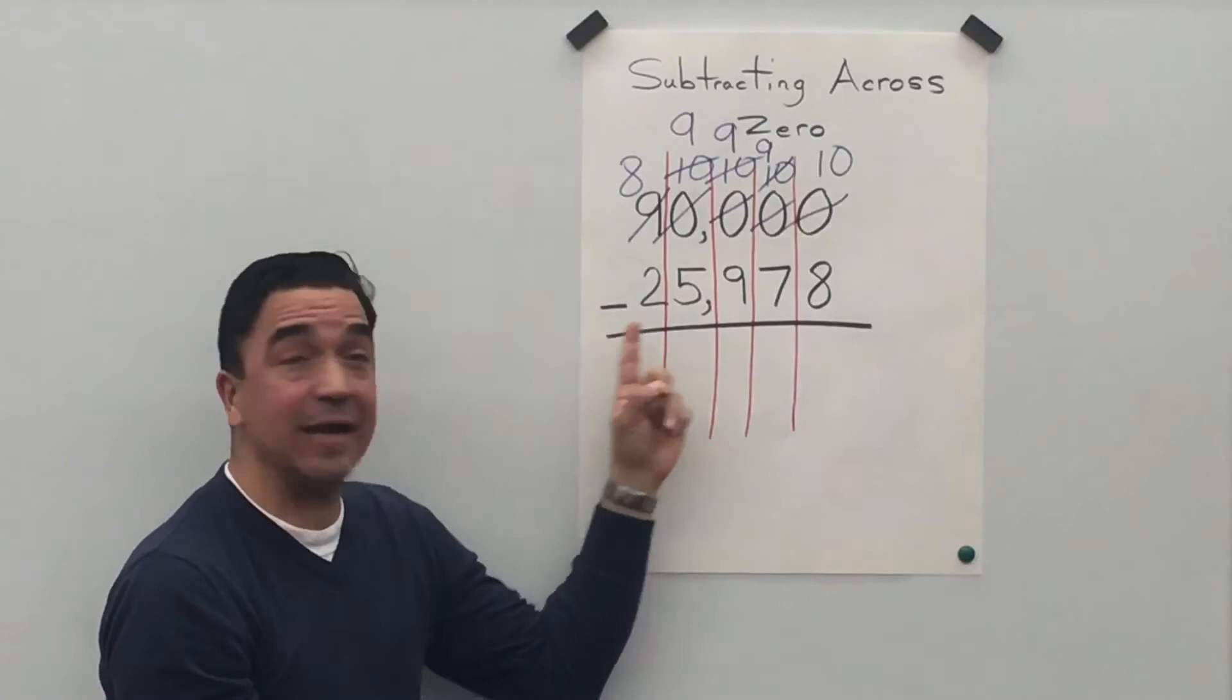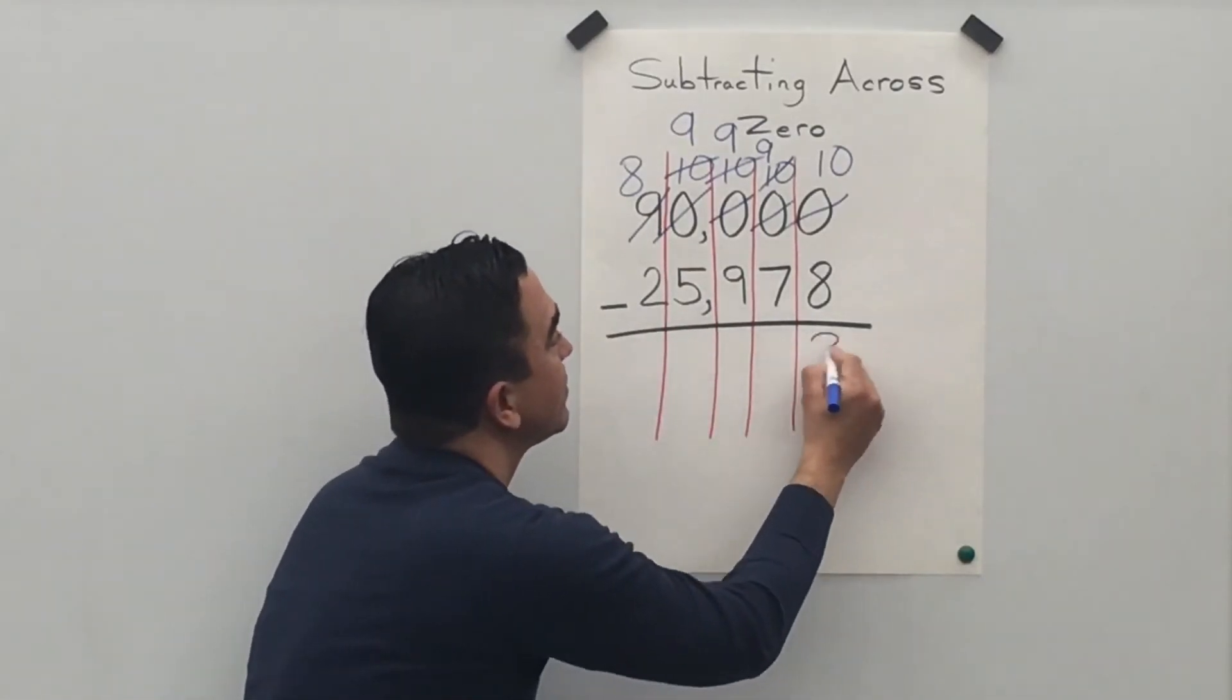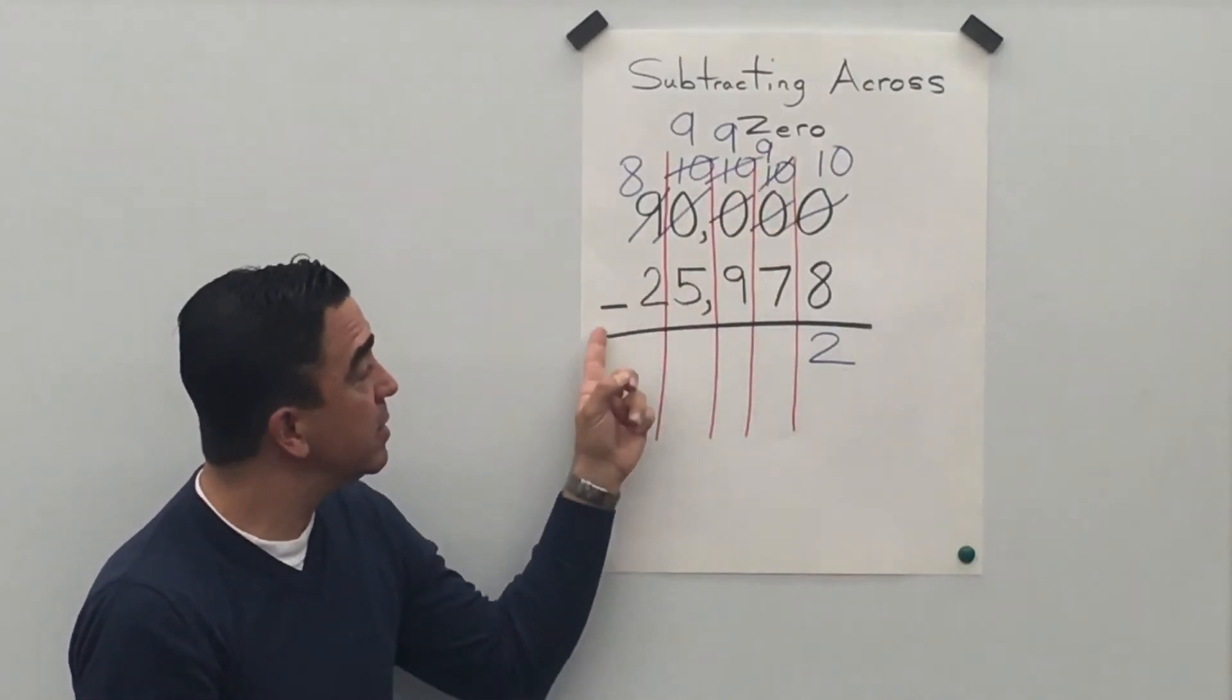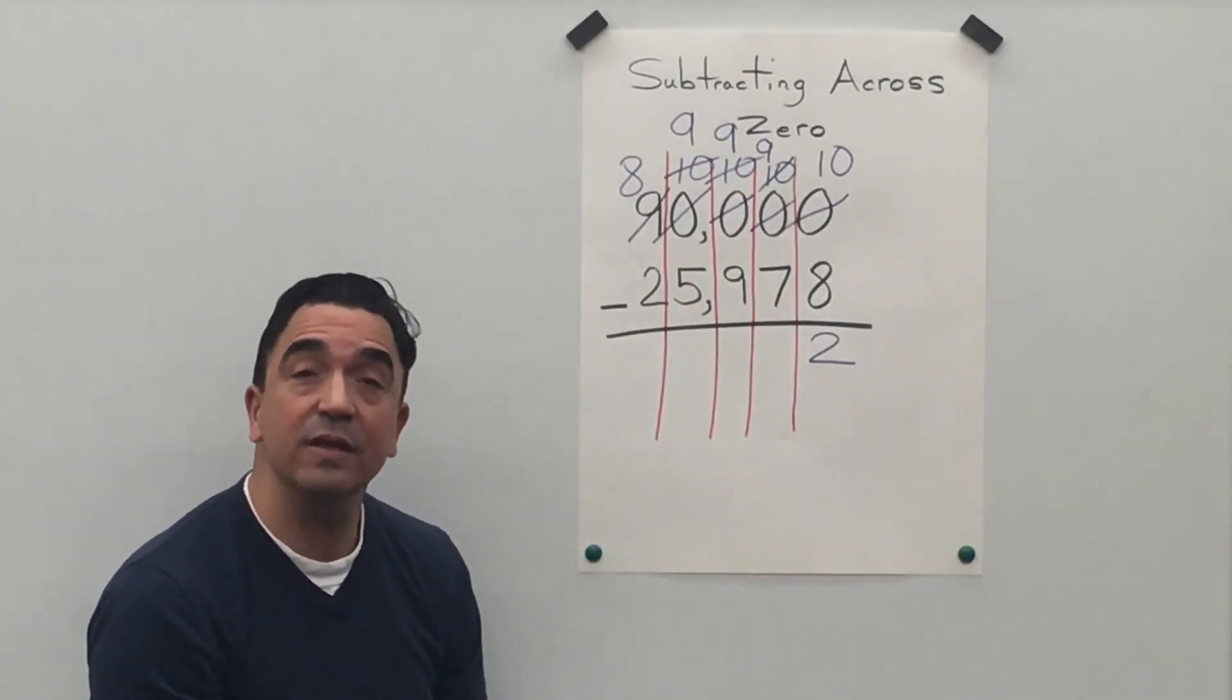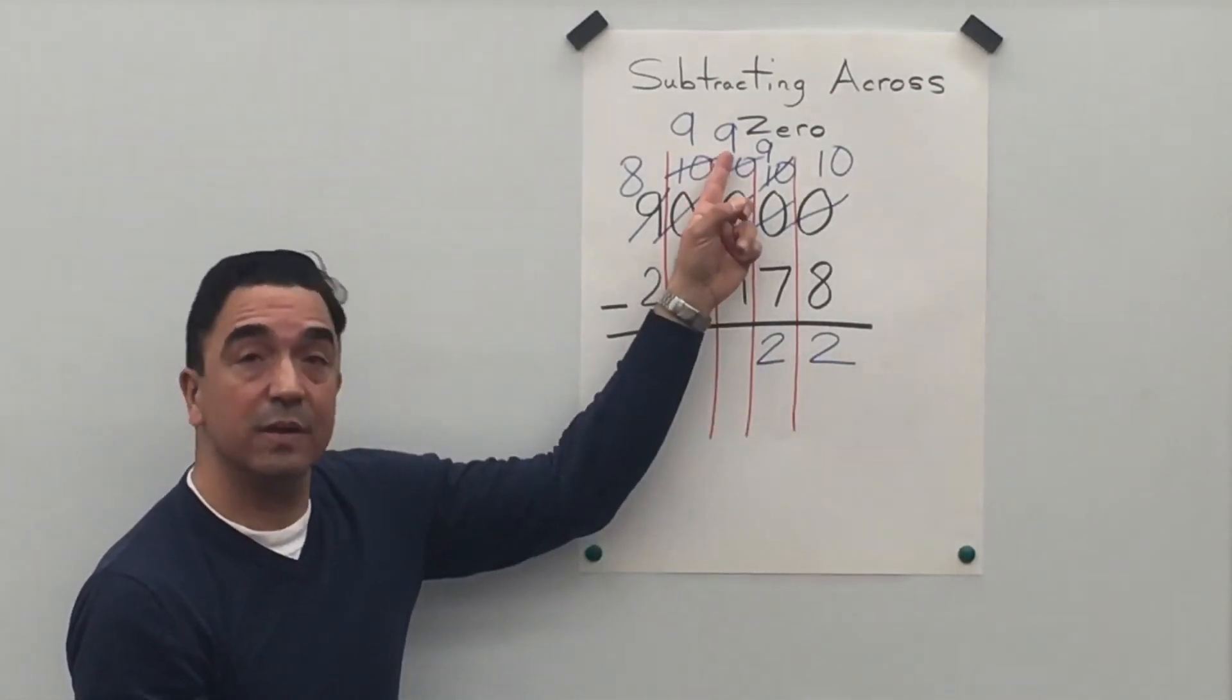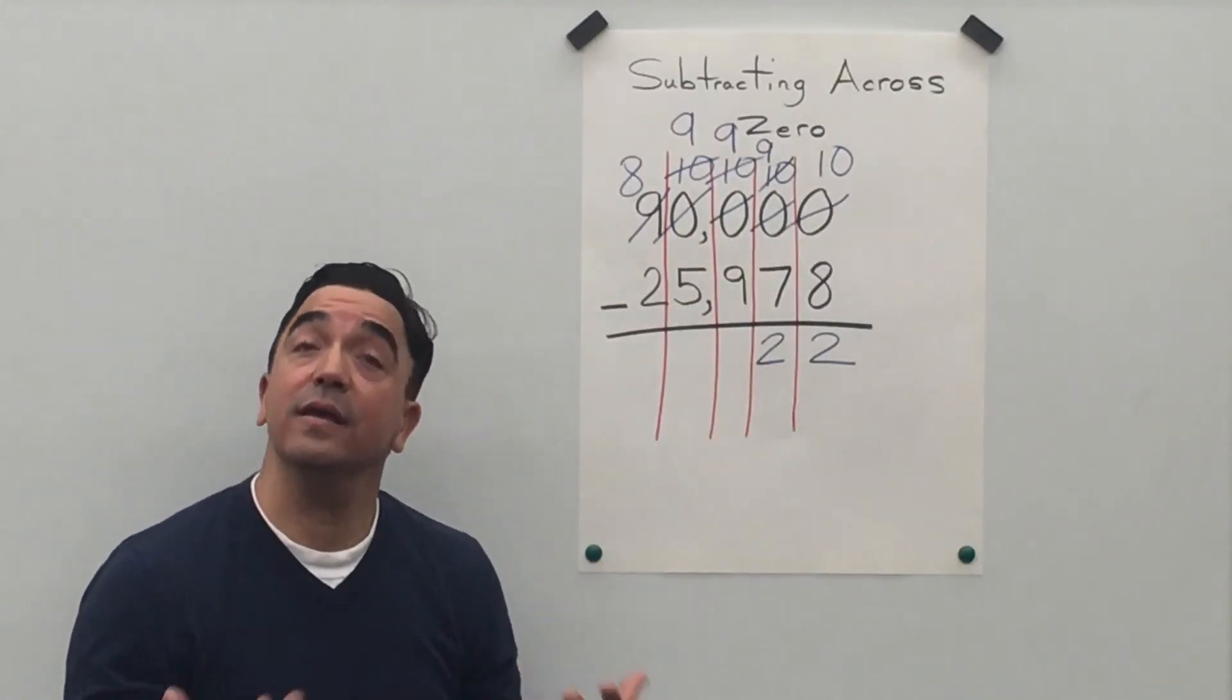Ten minus eight is two. Nine minus seven is two. Nine minus nine is zero.